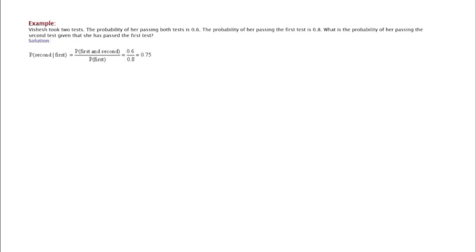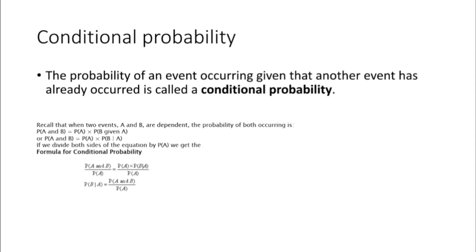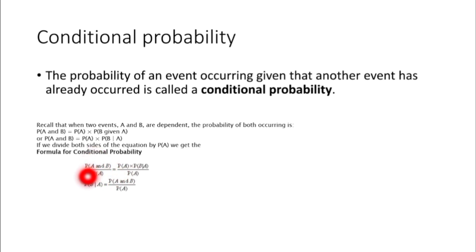When two events A and B are dependent, the probability of both occurring is P(A) × P(B). The formula to find conditional probability is: P(B|A) = P(A and B) / P(A). This is because for B to occur, A should be completed first — that is why we divide by the probability of A.